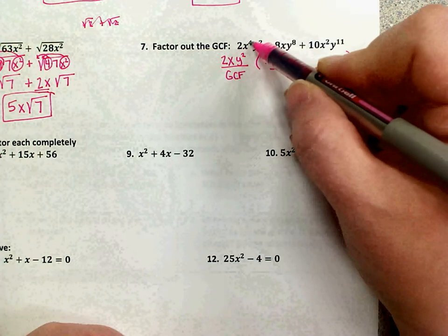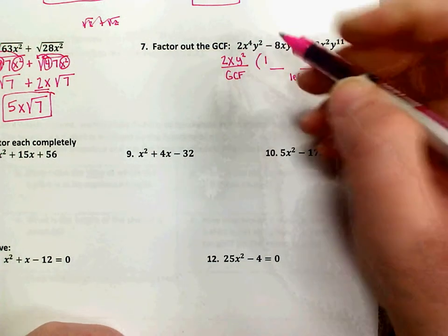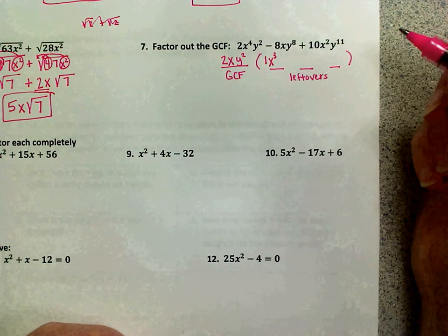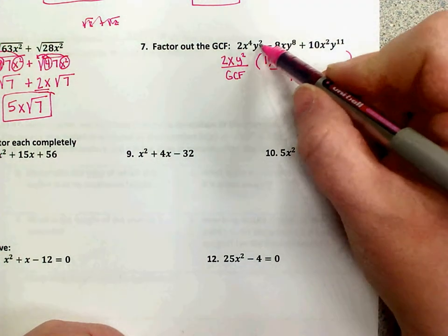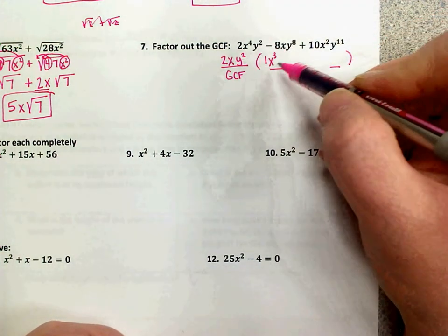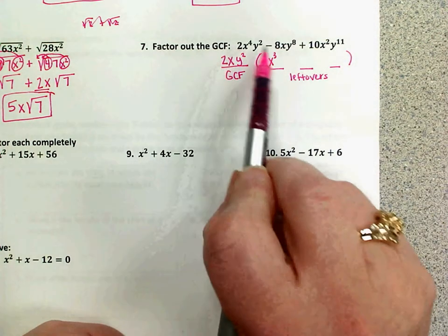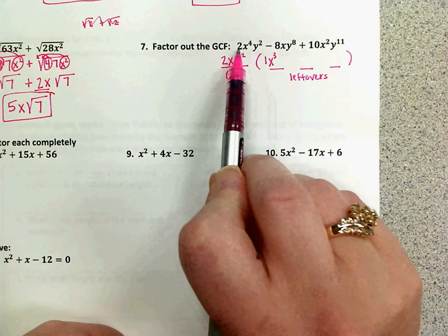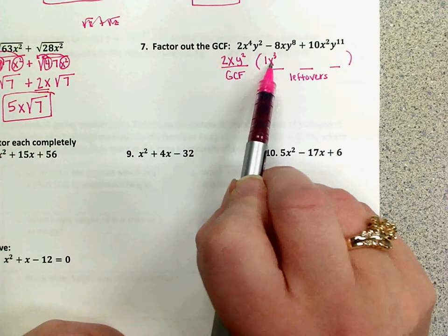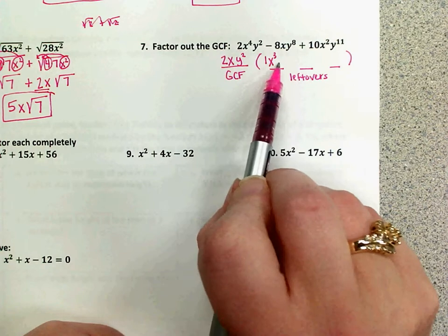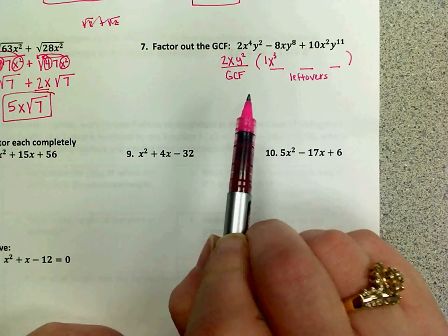I have four x's and I took one of them out, so I'm only going to have three remaining. So that's x to the third power. I had two y's and I took two y's out, so I'm not going to have a y left in that first term. So if we distributed, two times one would give me two, x to the first times x to the third would give me x to the fourth, and y to the second would not need anything else to remain y to the second.